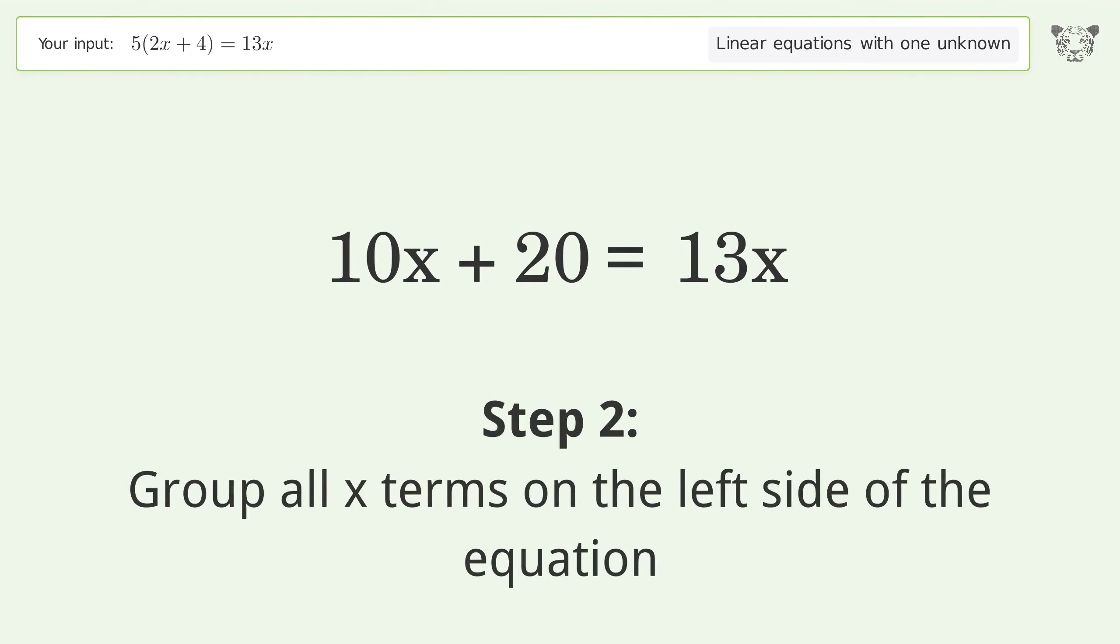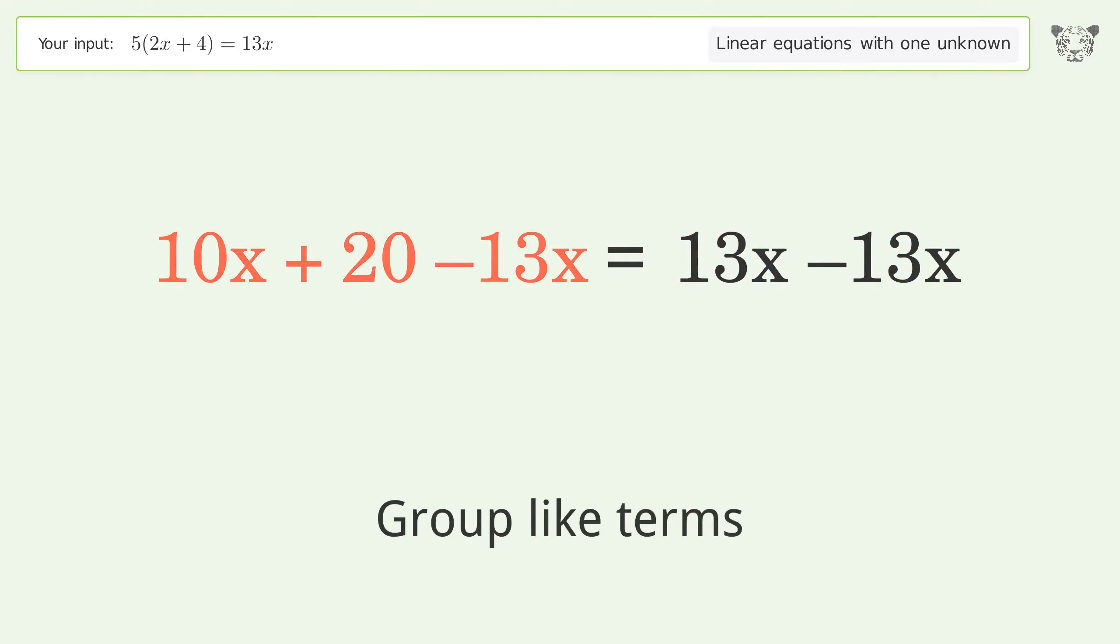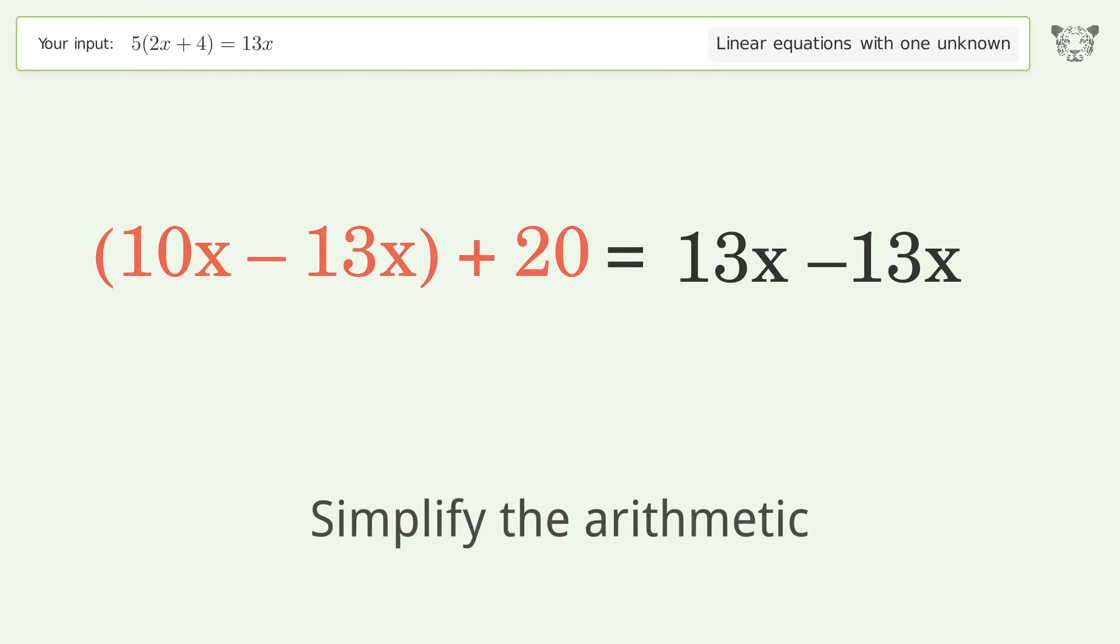Group all x terms on the left side of the equation. Subtract 13x from both sides. Group like terms and simplify the arithmetic.